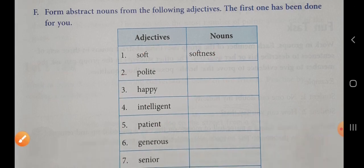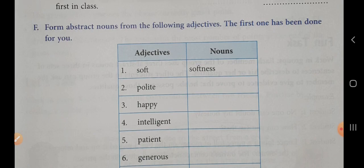You can see the first word that is written: soft. If we add N-E-S-S, that means 'ness,' that will be the abstract noun. Soft is an adjective and softness is a noun. The second one is polite. As we have added N-E-S-S to soft to make it an abstract noun, same thing we